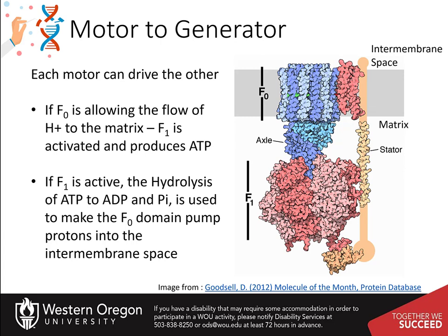In our cells, food is broken down and used to pump hydrogen ions across the mitochondrial membrane. The F-naught portion of the ATP synthase allows these ions to flow back, turning the rotor in the process. As the rotor turns, it turns the axle, and the F-1 motor becomes a generator, creating ATP as the F-naught domain turns.